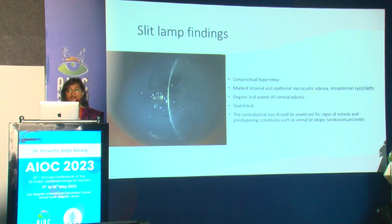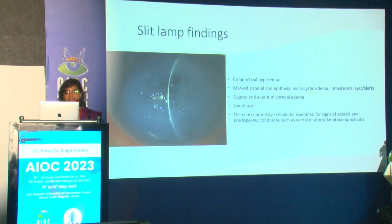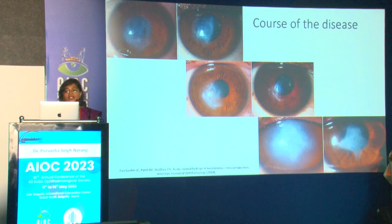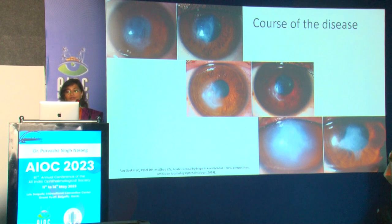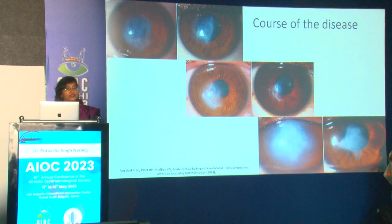Corneal edema can be graded by size: within a 3 mm circle as grade one, 3–5 mm as grade two, and more than 5 mm diameter as grade three. The contralateral eye should always be examined for signs of ectasia and for concomitant VKC or atopic keratoconjunctivitis. In most cases of acute corneal hydrops, it resolves spontaneously within two to four months as adjacent endothelial cells migrate and enlarge to cover the defect. Greater involvement means longer duration of edema, potentially leaving a visually significant scar and possible neovascularization.